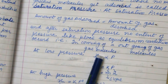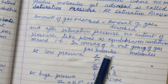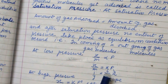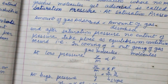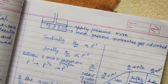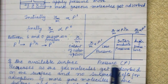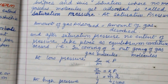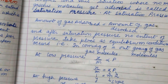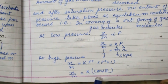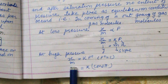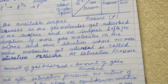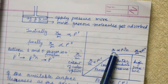At low pressure, X upon M is proportional to P. Removing the proportionality sign, we get constant K, which is the slope. Pressure is on the x-axis and X upon M is on the y-axis. At high pressure, X upon M is equal to K·P⁰, and since P⁰ equals 1, X upon M equals K, which is constant. That is why the curve becomes constant — it neither increases nor decreases.